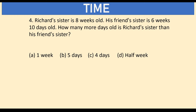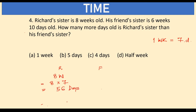Next question: Richard's sister is 8 weeks old. His friend's sister is 6 weeks and 10 days old. How many more days old is Richard's sister than his friend's sister? Richard's sister is 8 weeks old and 1 week equals 7 days, so 8 times 7 equals 56 days. The friend's sister is 6 weeks plus 10 days: 6 times 7 is 42, plus 10 equals 52 days.